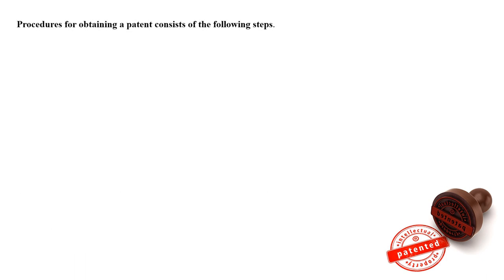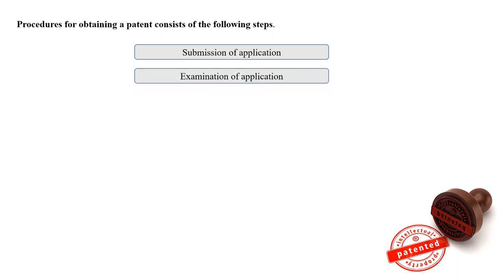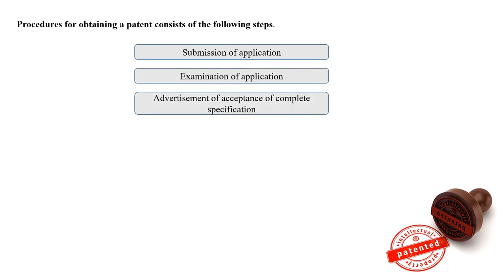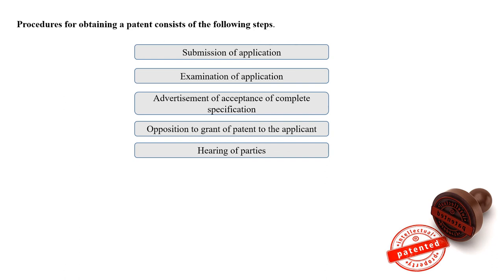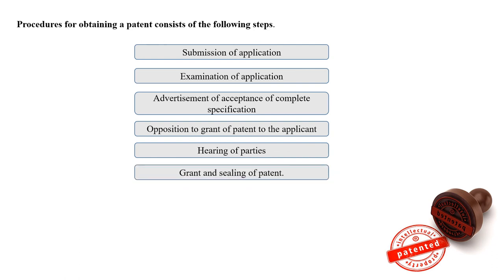The procedures for obtaining a patent consist of the following steps: submission of application, examination of application, advertisement of acceptance of complete specification, opposition to grant of patent, hearing of both parties — the applicant and the opposition — and finally grant and sealing of the patent.